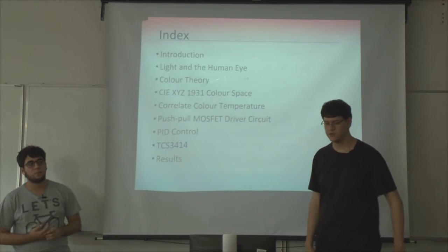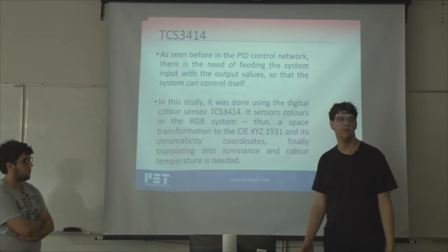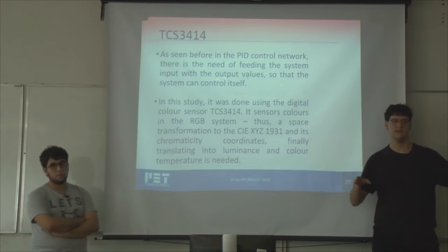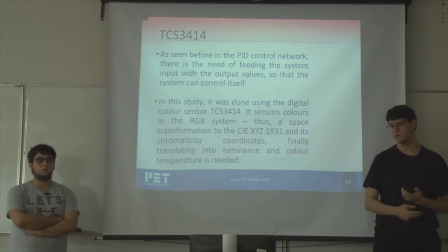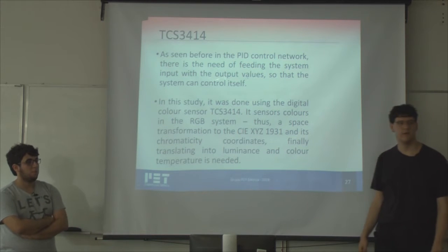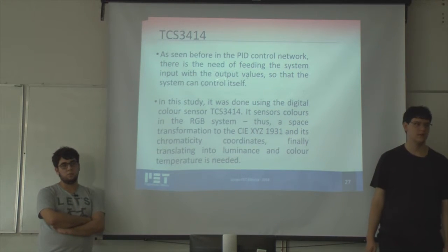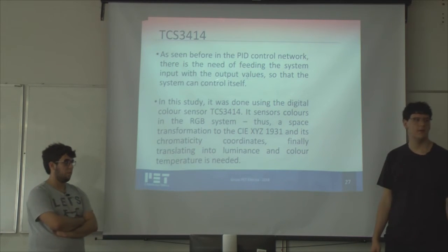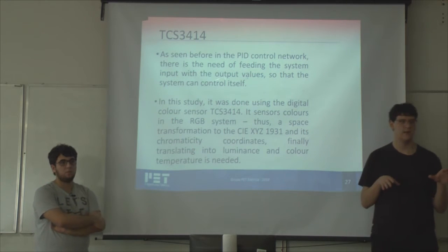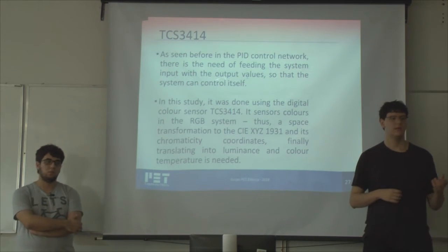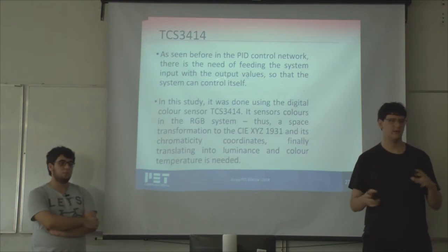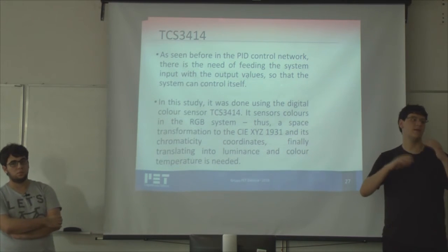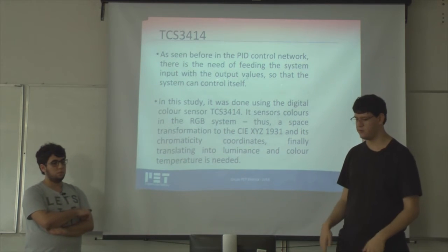Having talked about the control system and the power circuit, we have to talk about the sensor we use in our project. Because we have to feed the input stage of our system with the output response. We use the TCS3414 sensor. It's a digital color sensor with 16 bits of resolution. Being a color sensor, it was designed to work like the human eye. So it has a matrix of photodiodes. Some capture blue light better than others, or red light, or green light. It's done with the proportion to work like a human eye, to give the answer of a human eye.